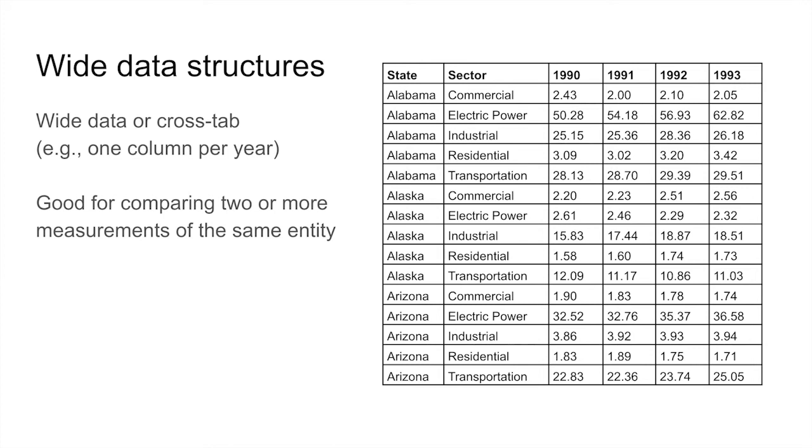You could imagine another crosstab of this dataset, where instead of having a separate column for each year, you have a separate column for each state. This would still be considered a wide data structure or a crosstab. This data structure is good if you want to focus in on the change of the data value across those columns, like the change in emissions over time. In fact, some tools like Excel even prefer a crosstab for certain kinds of charts, though this seems to be less common over time.